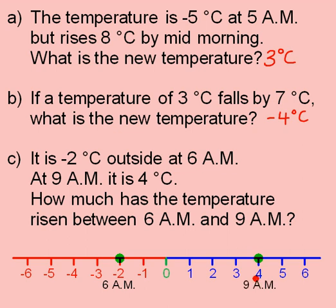I want to find how much the temperature has risen, so I'm going to start from the temperature at 6 a.m. and count up until I get to the temperature at 9 a.m. 1, 2, 3, 4, 5, 6. So the answer is 6 degrees.